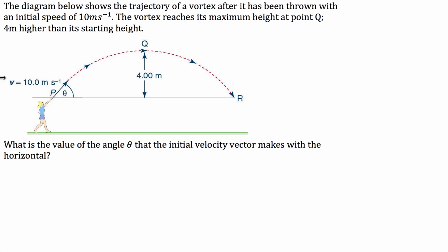What we're going to do is break up the initial velocity vector into its components. So we're going to draw a vector triangle. We've got an initial velocity of 10 metres a second and we know this is a right angle and we're looking for this angle.